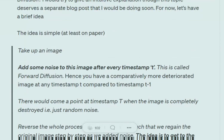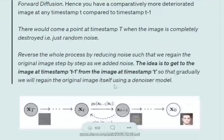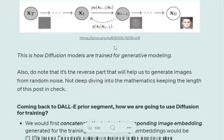You continue this process until the image is completely random noise and nothing can be identified from it. So you started with a good quality image, added random noise at each timestamp such that quality is worse at T+1 compared to T. Then there comes a point where the image is completely destroyed. Now we reverse the whole process to get back to the original image — getting the image at timestamp T-1 from the image at timestamp T, step by step reducing the noise. This is how diffusion models are used for generative modeling.